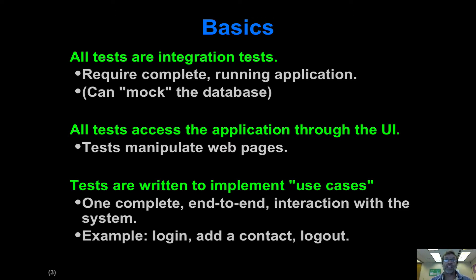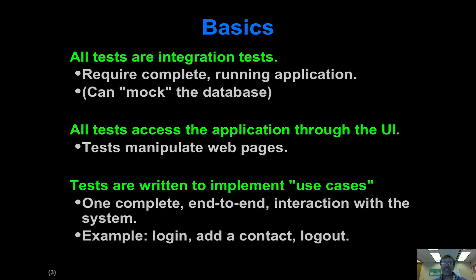The advantage of this approach is that you get a fair amount of coverage of the code base with relatively little testing code, because when you're testing through the user interface, you're exercising a lot of application code for every line of test code. That means as your system evolves over time, you'll spend less time rewriting and maintaining your test code — it remains a fairly small percentage of your code base. On the other hand, it can make it harder to diagnose when a test goes bad and where exactly in the code things broke. So that's a downside — every approach has pros and cons.